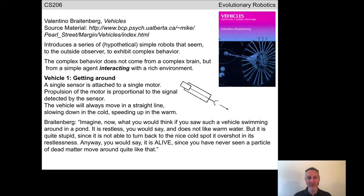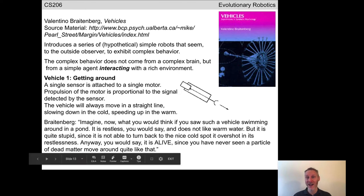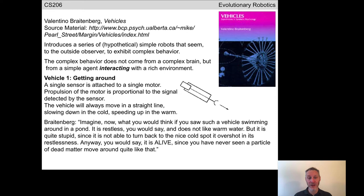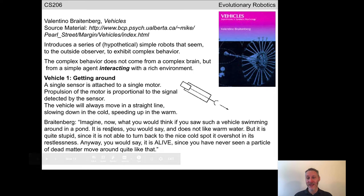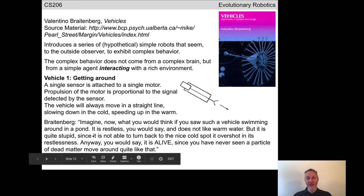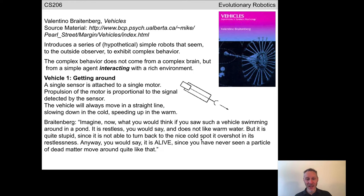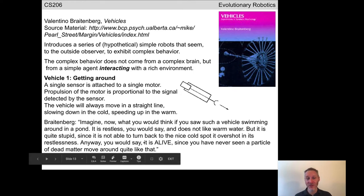Because there's a wire connecting the sensor to the motor, the higher the temperature recorded by the sensor, the faster the wheel will turn; the lower the temperature, the slower the wheel will turn. This is the simplest possible robot you can imagine: one body, one sensor, one motor, and one connection. Moving through an environment with fluctuating temperatures, it will always move in a straight line — it will move slower in cold regions and speed up in warm regions. Braitenberg asks you to imagine what you would think if you saw this vehicle swimming in a pond — you would say it's restless, and doesn't like warm water.